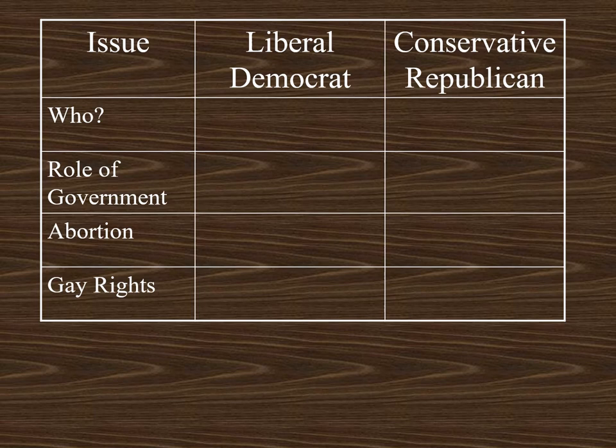The approach I'd like to take would be to fill in a chart. We'll look at who, the role of government, and then several issues. Sometimes I'll start with conservative Republicans, and on the next issue I'll start with liberal Democrats, and hopefully I'll provide equal treatment to each of the parties.